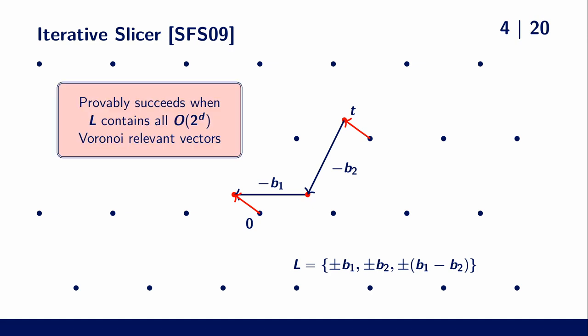This algorithm always succeeds if and only if the list contains all so-called Voronoi relevant vectors.